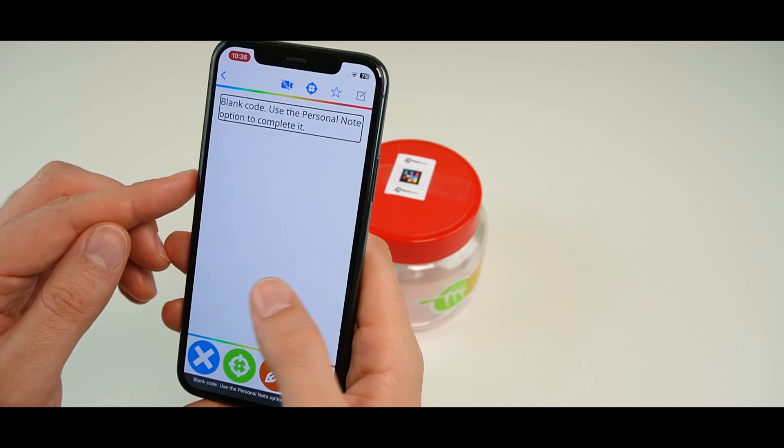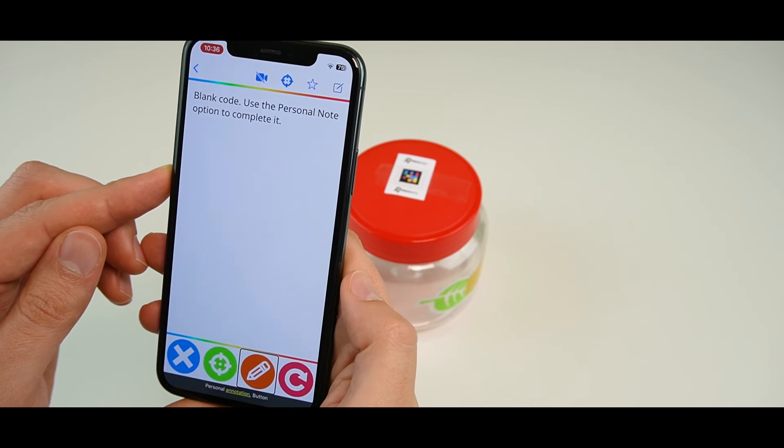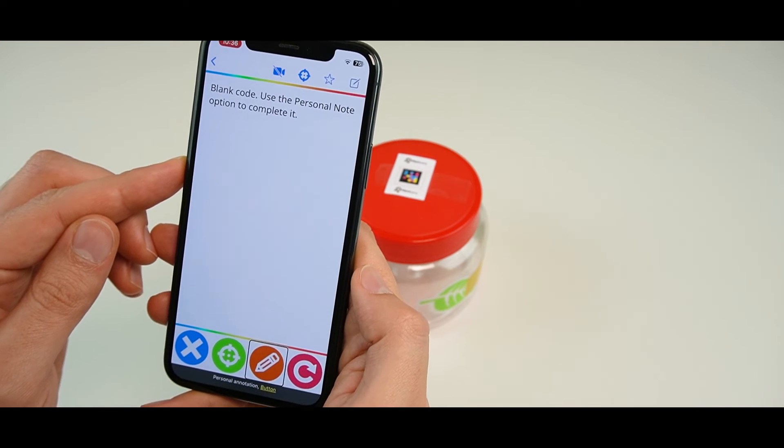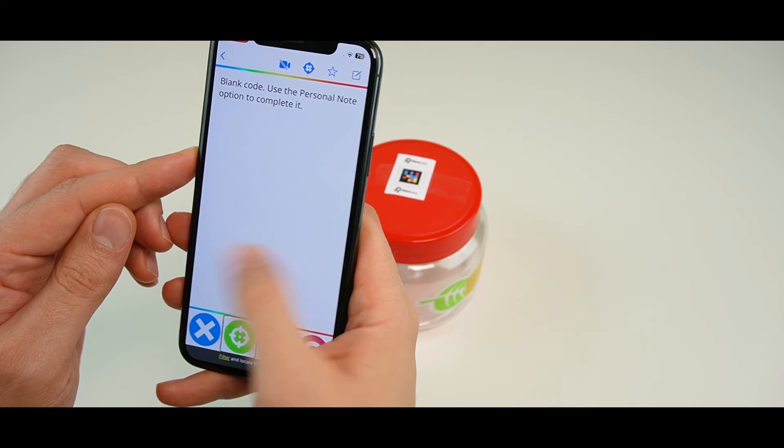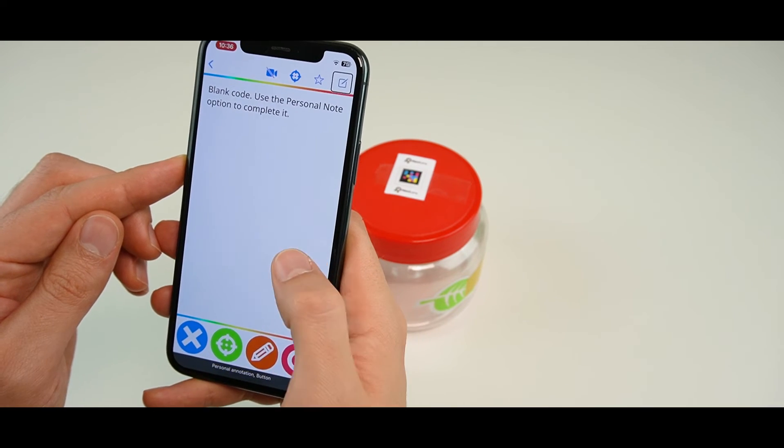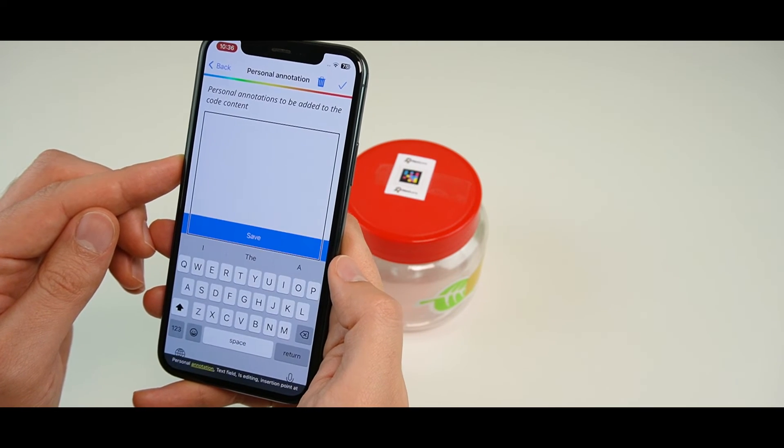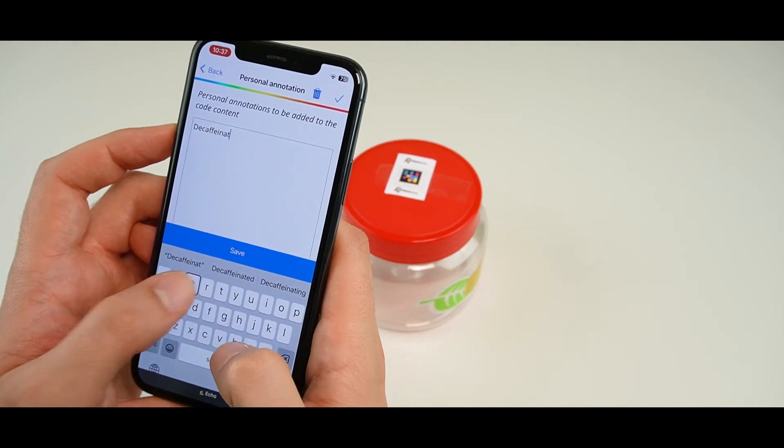Now, click on the personal annotation option that can be found both in the lower right part of the screen and at the top right-hand side. Personal annotation. Write the text you want to include and click on save.